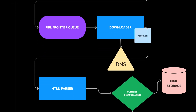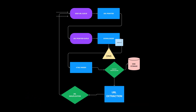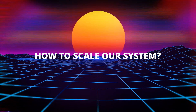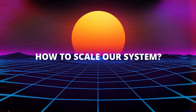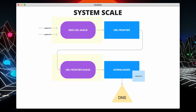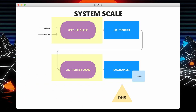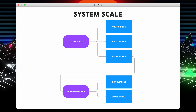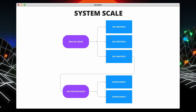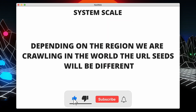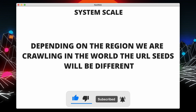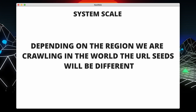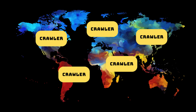You might be wondering how this system is going to handle 2 billion crawls a month, or how we are going to make this scalable. The answer is having queues in between components, which allows us to decouple the system. For example, we could have multiple downloader instances picking up messages from the queue, and we could do the same with the rest of the components. Depending on the region we are crawling, the URL seeds will differ, and if we were to crawl a big portion of the web, we could have different instances running in different data centers across the globe, which speeds up crawling as our instances will be closer to the data sources.